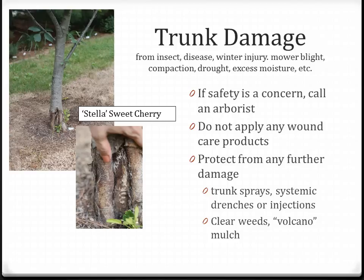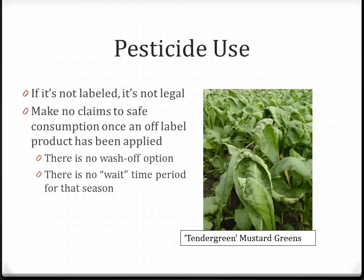The first step in safe and proper pesticide use is to thoroughly read the label. If it's not labeled for use, it's not legal to apply. Should you make a mistake and apply a pesticide not labeled for use on an edible crop, it is no longer deemed safe to consume — there is no wash-off option and no wait time period for that season. For safety's sake, we don't consider it safe to eat.